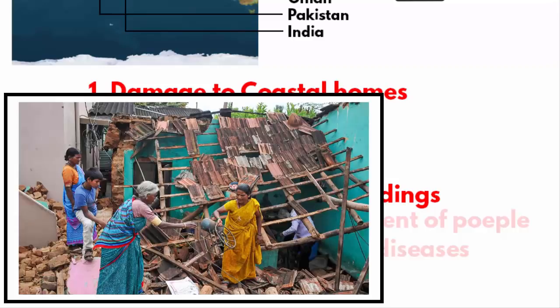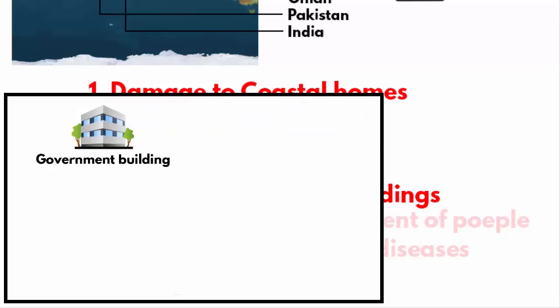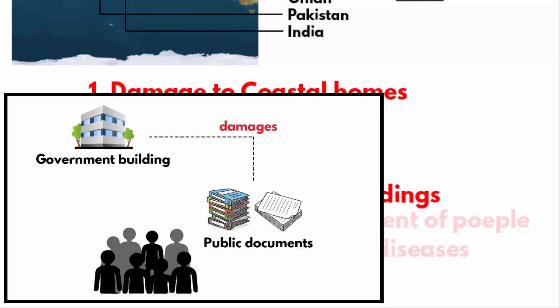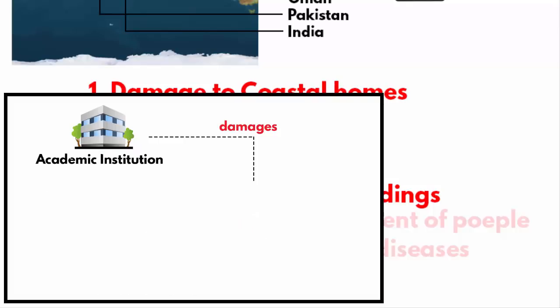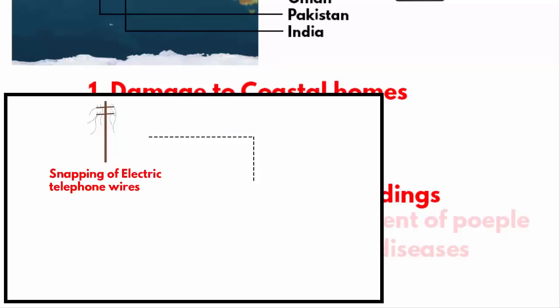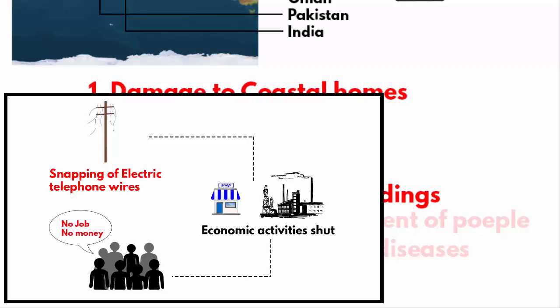People lose their belongings and valuable assets due to damage of private buildings. If a government building collapses, valuable public documents are lost or damaged. If an academic institution is damaged, it hampers the education of many children. Snapping of electric wires and telephone lines disrupts many economic activities with a compounding effect on many other sectors, since these are basic essential services.